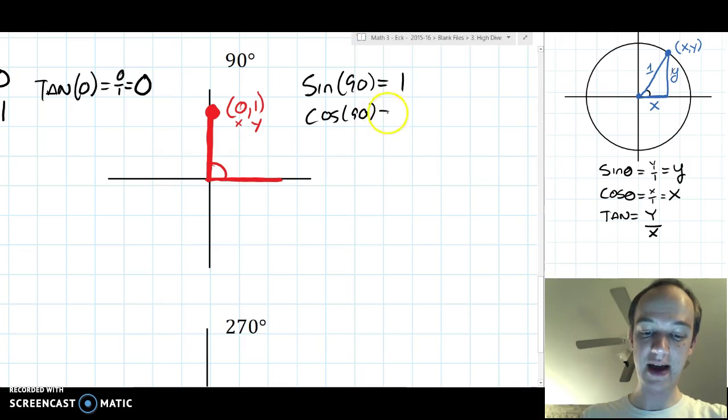Cosine of 90 has to be 0, because it's the x coordinate. And if you look at this, if there were a triangle, and there's not, but if there were, the base would have to be 0. And that's the adjacent side. So it sort of makes sense that cosine of 90 should be 0.